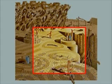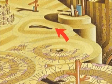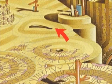Haversian systems, each about 1/60th of an inch wide, make up the structure of compact bone. Each system is formed by a series of rings called lamellae, which are deposits of mineral salts and collagen fibers.